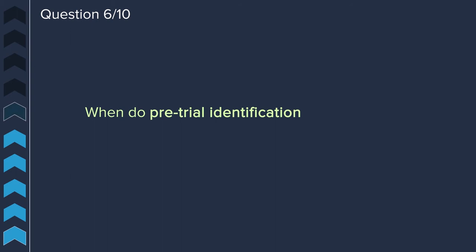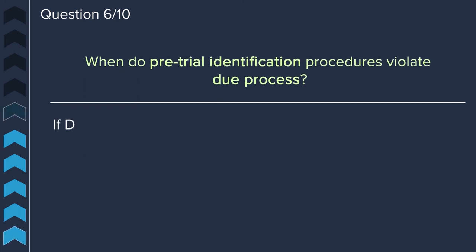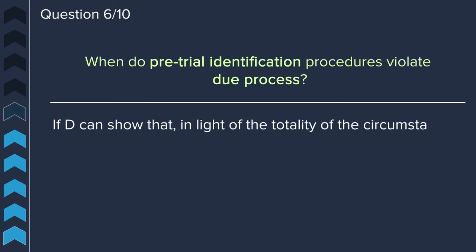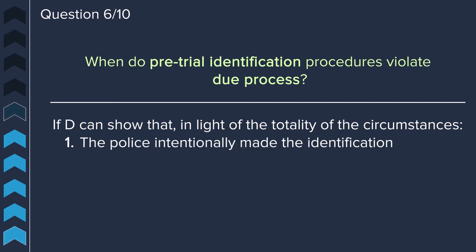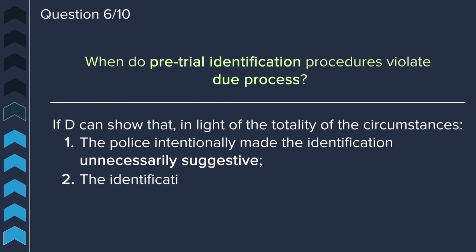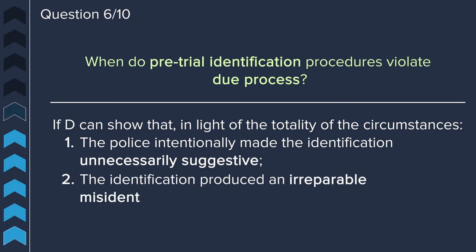Question six: when do pre-trial identification procedures violate due process? Pre-trial identification procedures violate due process when the defendant can show that, in light of the totality of the circumstances, the police intentionally made the identification unnecessarily suggestive, and the identification produced an irreparable misidentification or is unreliable.